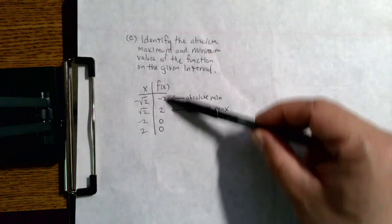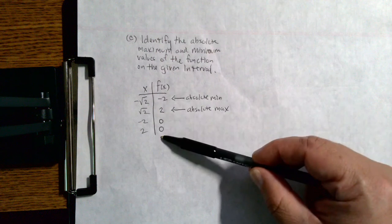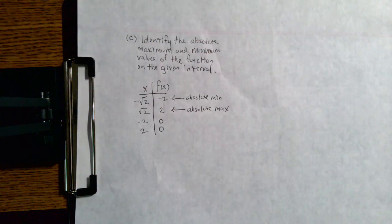By comparing these y-coordinates, we've got negative 2, we've got positive 2, we've got 0.